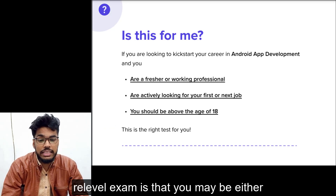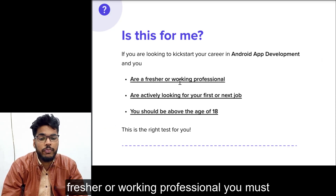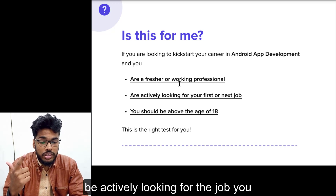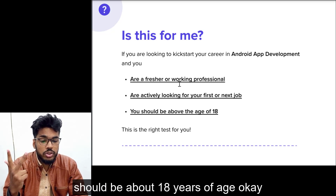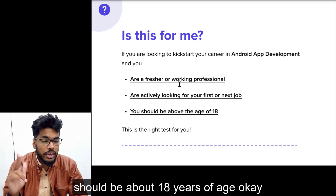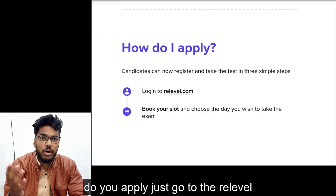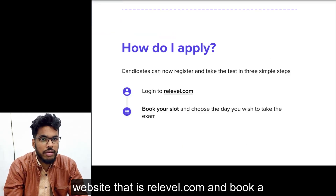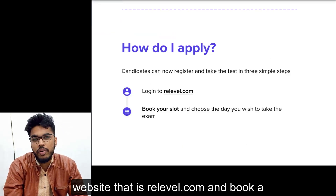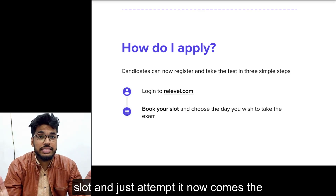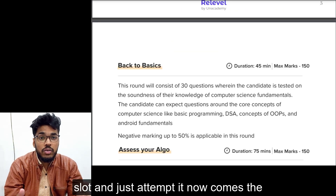The placement eligibility criteria for the Relevel exam: you may be either a fresher or a working professional, you must be actively looking for a job, and you should be about 18 years of age. To apply, just go to the Relevel website — Relevel.com — book a slot, and attempt it.